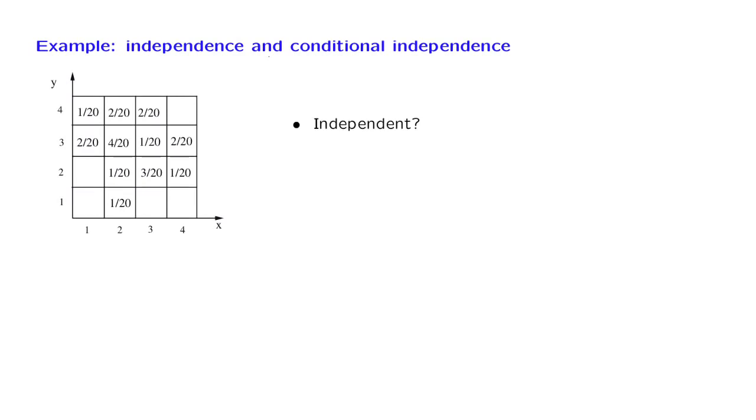Are x and y independent? We can try to answer this question by using the definition of independence, but it is actually more instructive to proceed in a somewhat more intuitive way. We look at this table, and we observe that the value of 1 is possible for x. In particular, the probability that x takes the value of 1.